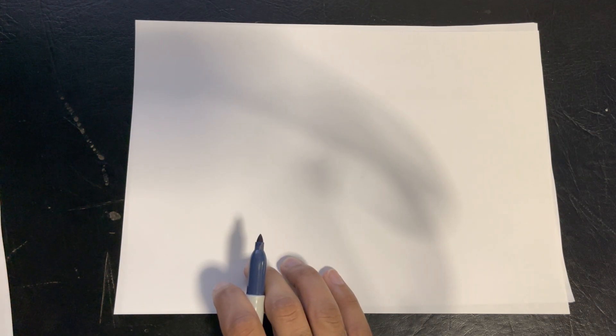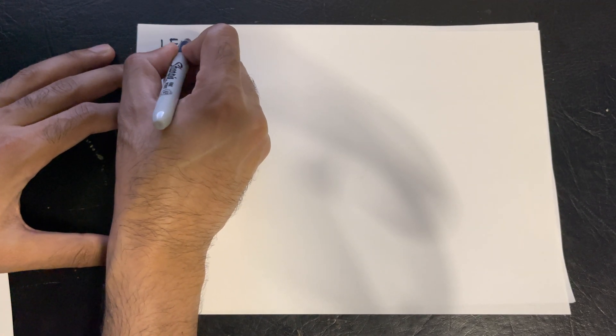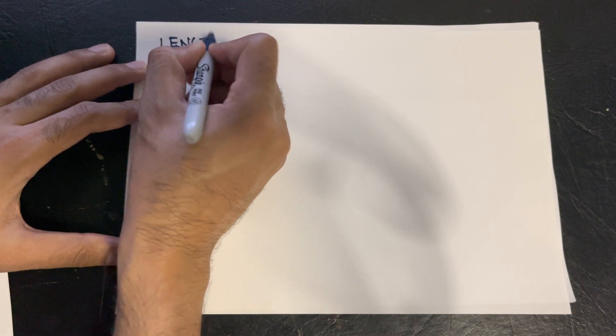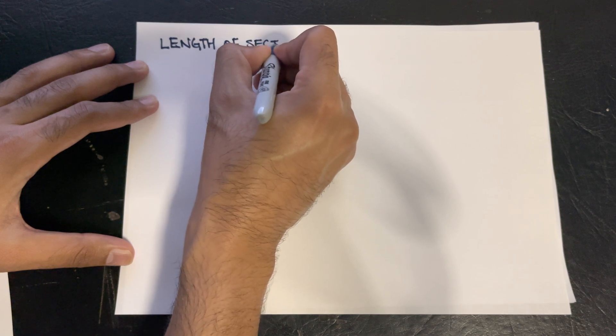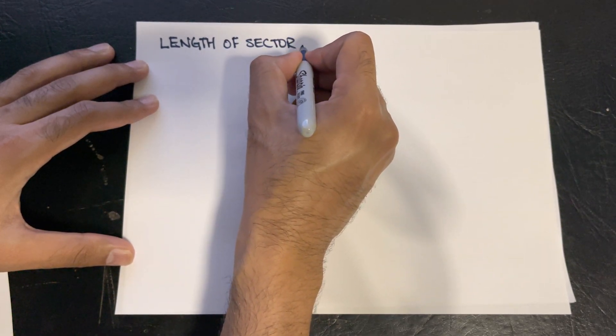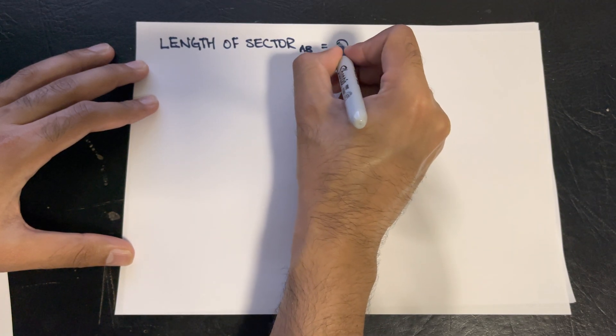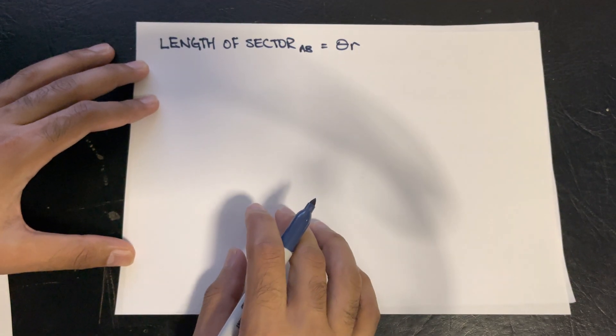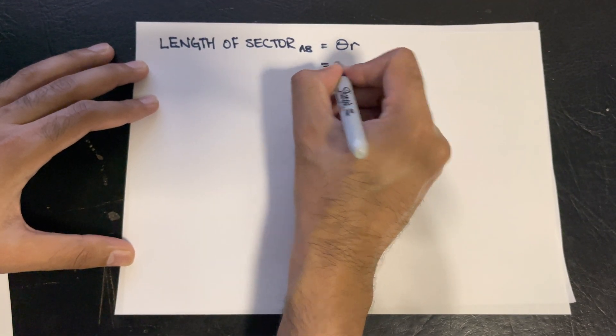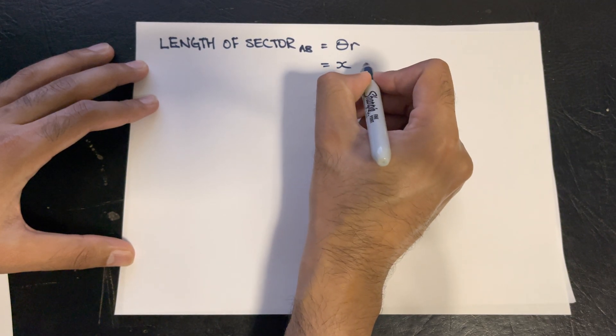My approach is that we know the length of the sector by its definition, from A to B, being equal to the angle, the radian angle, being multiplied by its radius. And we know that theta, or the angle, is expressed as x,